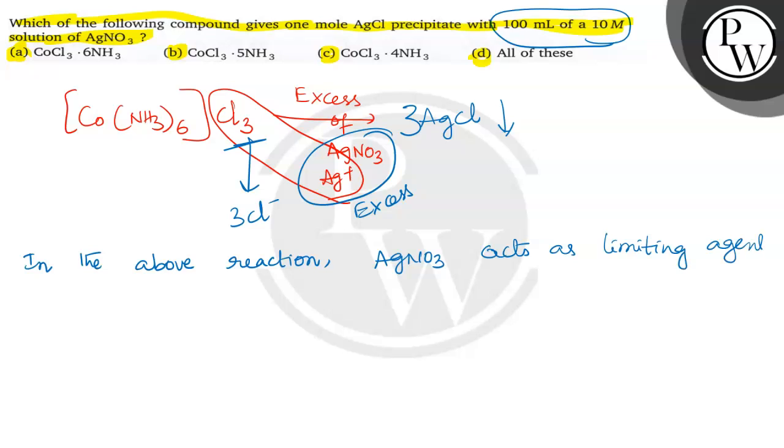If excess amount given, then we can say exactly 3 moles of AgCl. First one gives 3 moles of AgCl, second one gives 2 moles of AgCl, and third one gives 1 mole of AgCl.